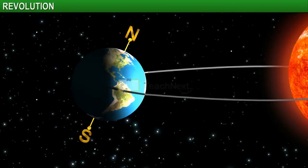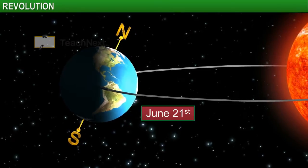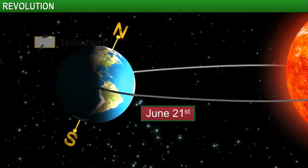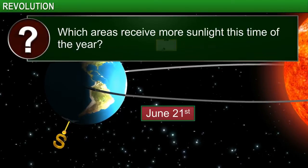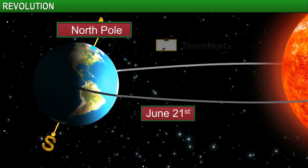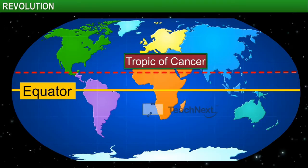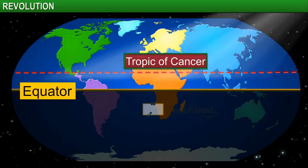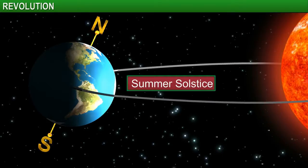Let's see how that happens. On June 21st, looking at the position of the Earth, try and identify the areas that receive most of the sunlight due to the tilt. As you can see, the north pole is tilted towards the Sun. You will recognize this area as the Tropic of Cancer. This area receives direct sunlight and as a result it is summer in the northern hemisphere. This position of the Earth is called the summer solstice.